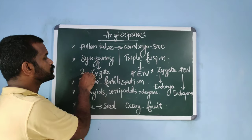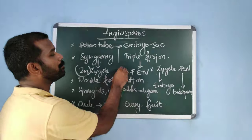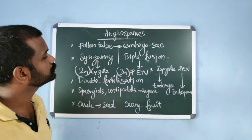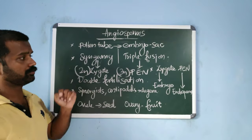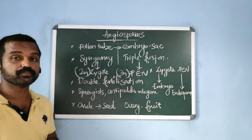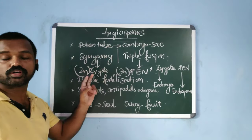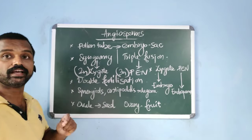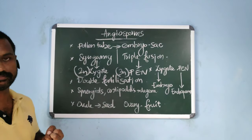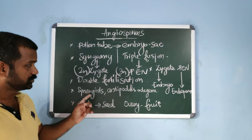The pollen tube enters the embryo sac where the male gametes are released. Of the two male gametes, one fuses with the egg to form a diploid zygote — this fusion is known as syngamy. The other male gamete fuses with the diploid secondary nucleus to form a triploid primary endosperm nucleus (PEN). Since two fertilization events occur — syngamy and triple fusion — this is known as double fertilization, a unique event seen in angiosperms.